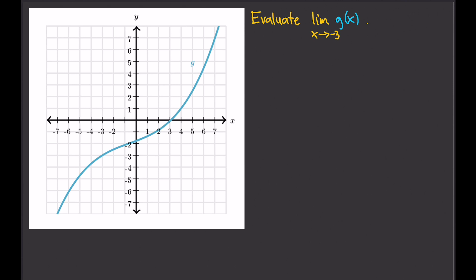The way I like to do this is I'll draw a vertical line at x equals negative 3. That vertical line will represent x equals negative 3, because we are approaching negative 3. That vertical line sort of acts as a wall that you will approach.